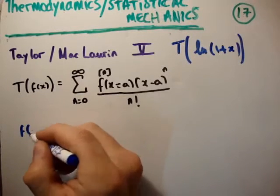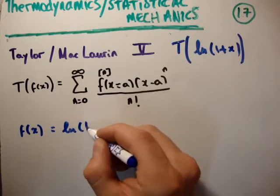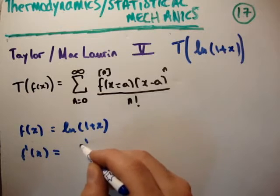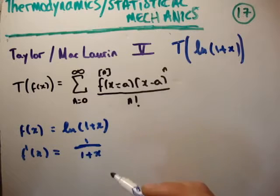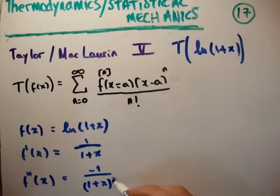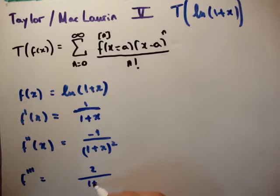So let's take the 0th derivative of f of x, well that's just going to be equal to the natural logarithm of 1 plus x. If we take the first derivative of our function, we're going to get 1 over 1 plus x. If we take the second derivative of our function, we're going to get negative 1 over 1 plus x squared. If we take the third derivative of our function, we're going to get 2 over 1 plus x cubed.